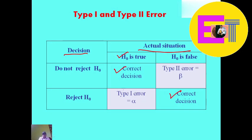But when the null hypothesis is true and we reject it, this is an example of a type 1 error or alpha error, also called level of significance.